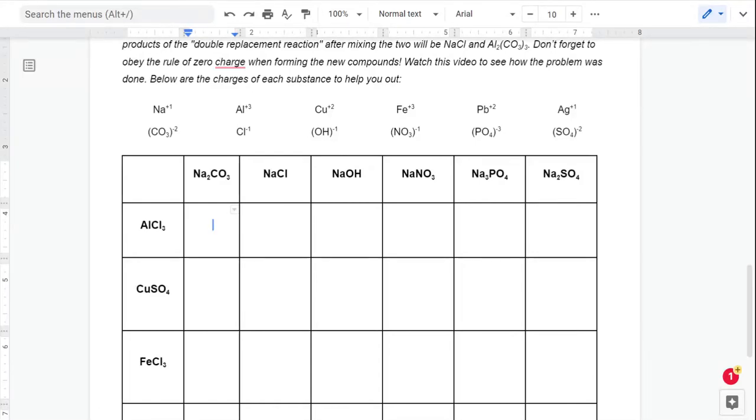All right, let's take a look at how to do this first problem here. This is a double replacement reaction between two substances. Here we have sodium carbonate, and that is going to mix with aluminum chloride.